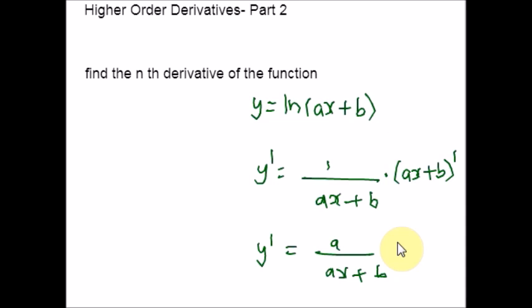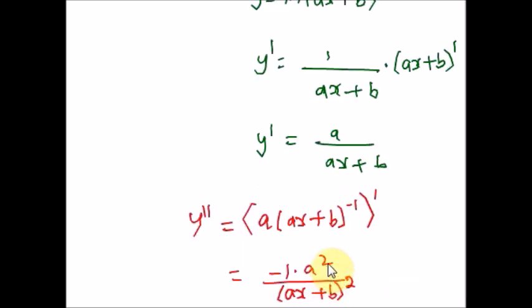Whenever you shift something from numerator to denominator or denominator to numerator, there will be a change in the exponent. Since this is a positive exponent term, if you shift it to the numerator, it becomes raised to negative 1. You can then rewrite the expression and use either the product rule or the quotient rule, depending on your convenience.